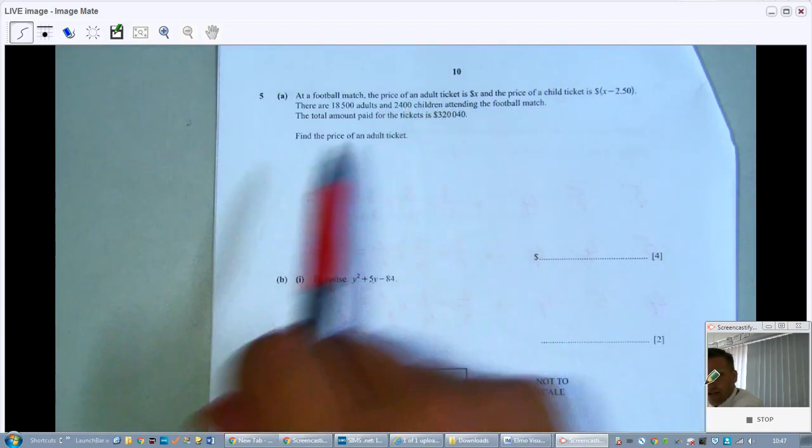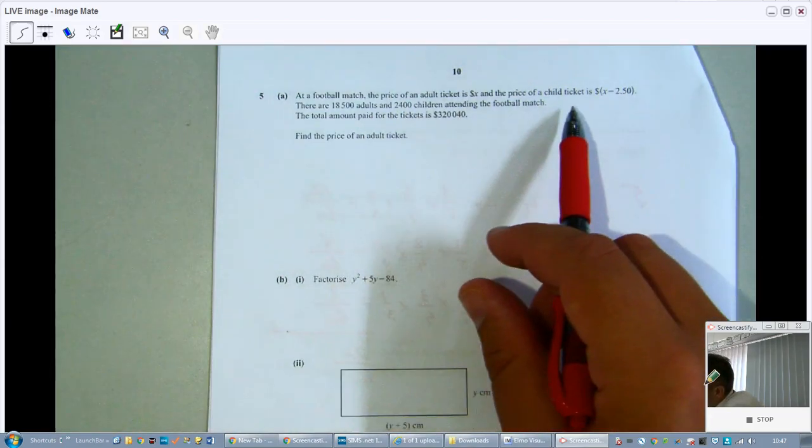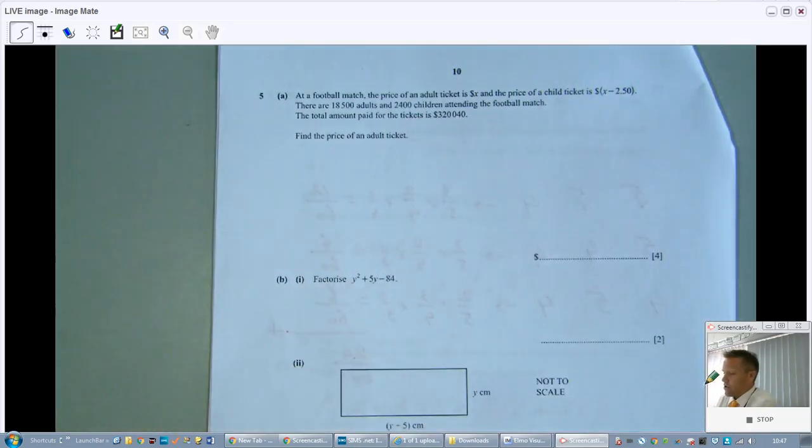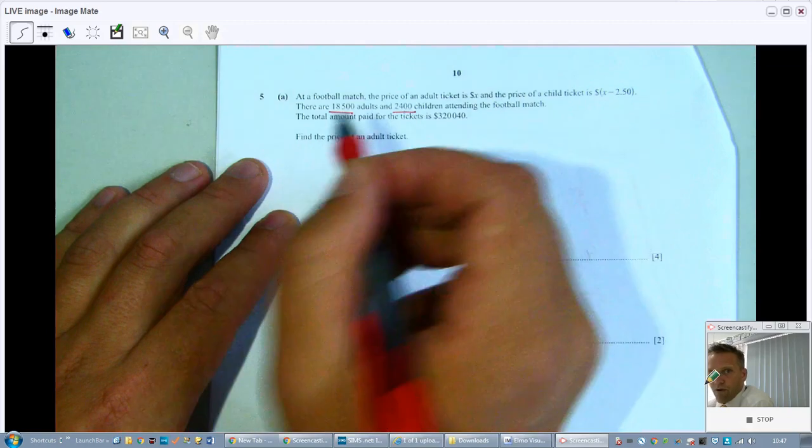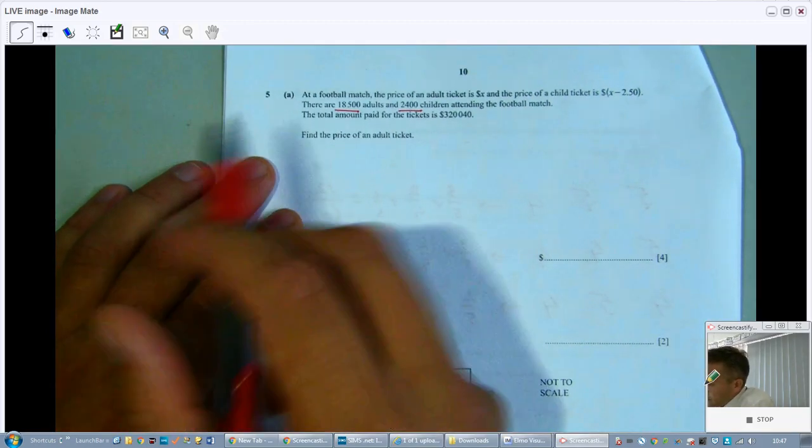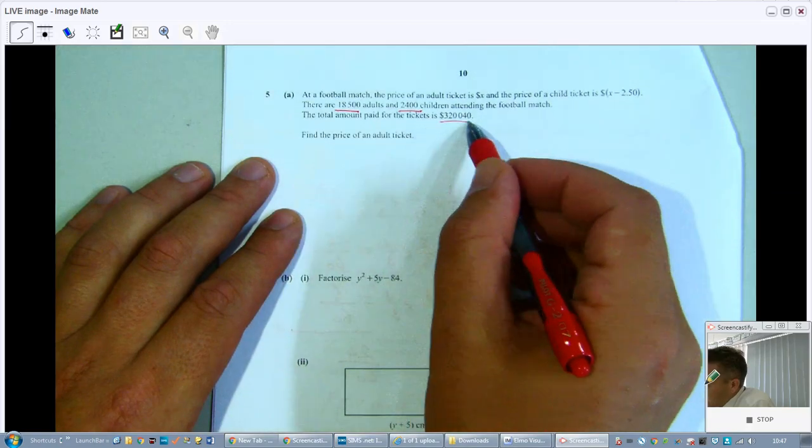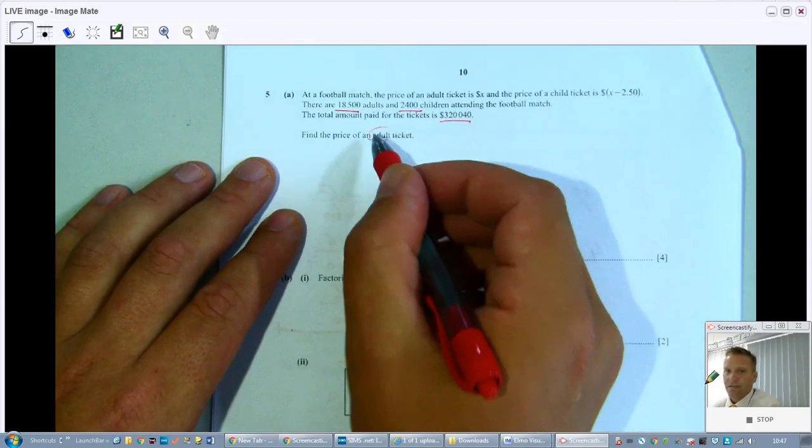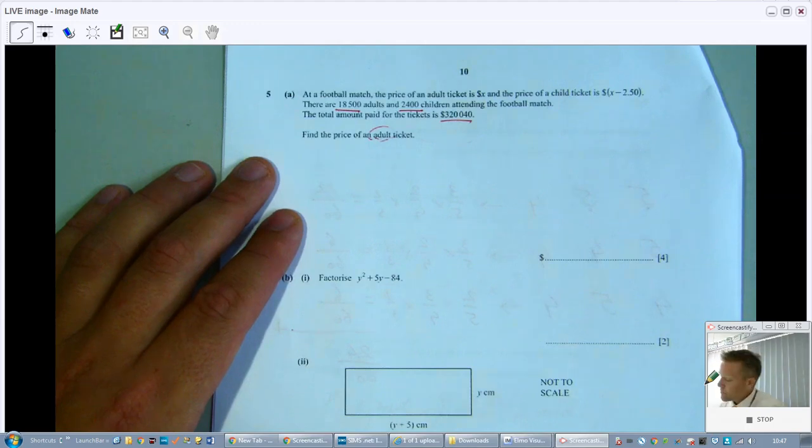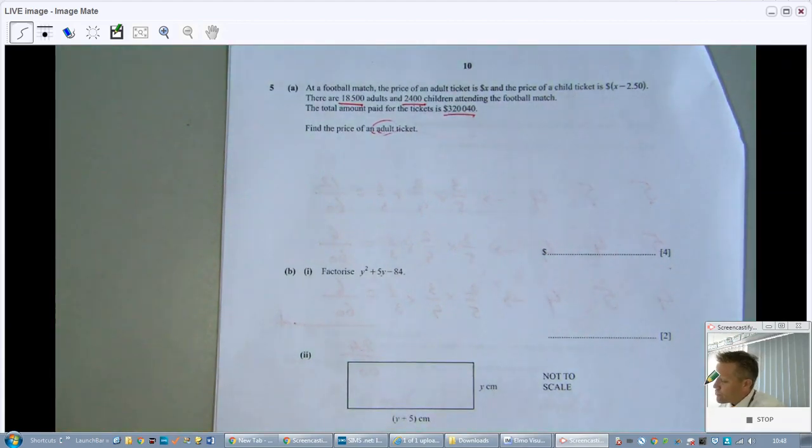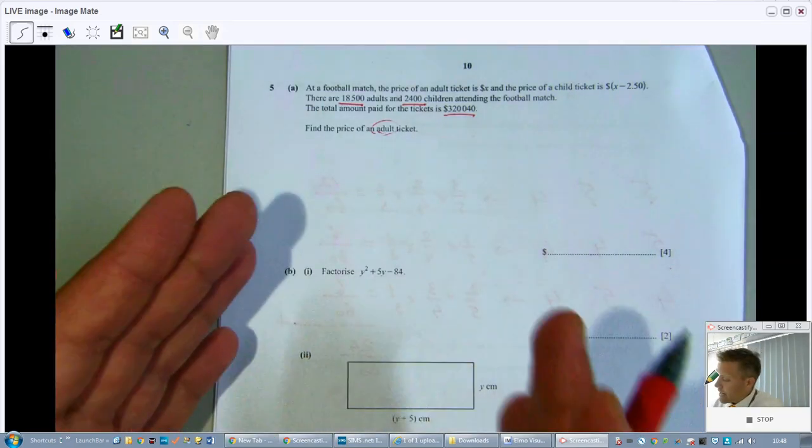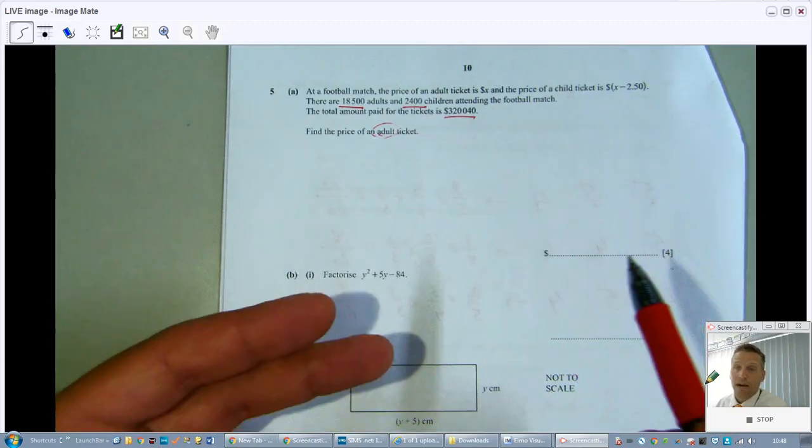At a football match, the price of an adult ticket is X dollars, and the price of a child ticket is X minus 2.50 dollars. So a child is 2 and a half dollars cheaper, the ticket. There are 18,500 adults and 2,400 children attending a game. The total amount paid for the tickets is this number. Find the price of an adult ticket. So find X. What is X? For four points, so we have some time to do it. So you'll have to construct an equation. And they only give information that you need. So the information they give, I need to construct my equation and solve it.